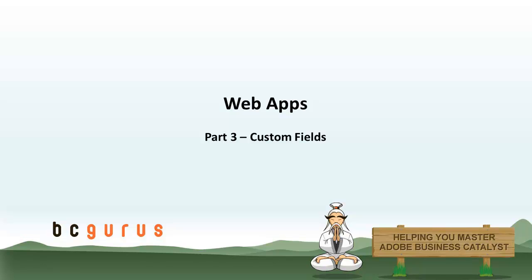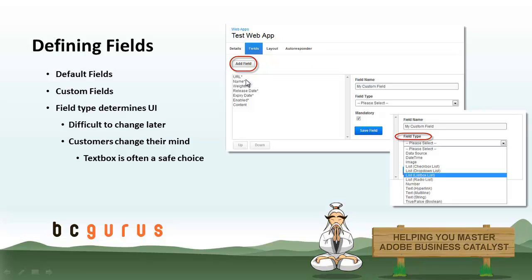You get several fields by default when you create a web app — things like the URL, the name, the content. You've seen some of those in the last video, but chances are if you're using web apps at all it's because you need to define custom data types, and that's where custom fields come into play. You can add as many custom fields as you want to each web app. Each field has a name, a data type — such as date/time or a text string — and optionally you may need to define list items if you're using a drop-down list field type.